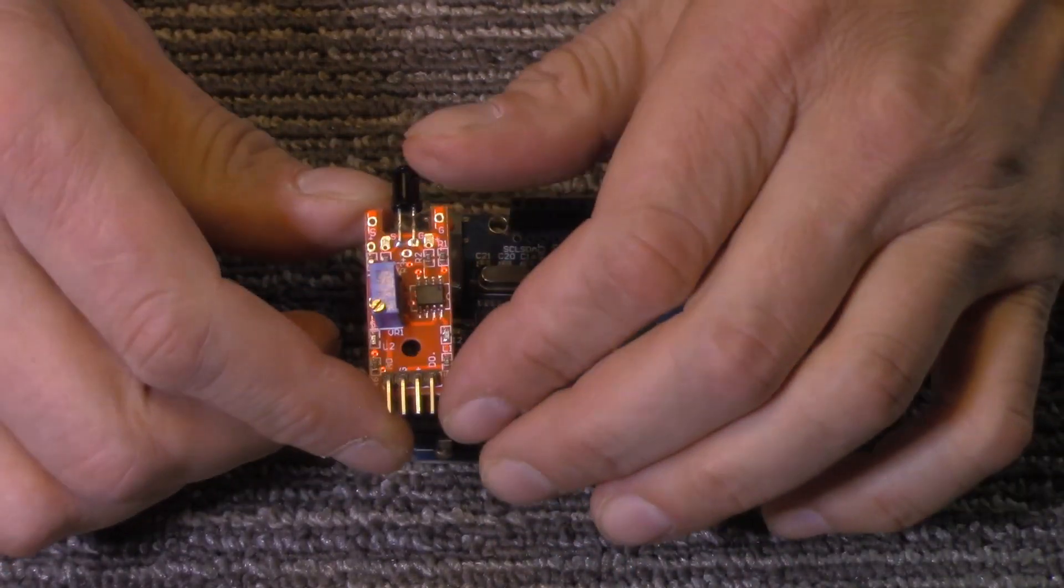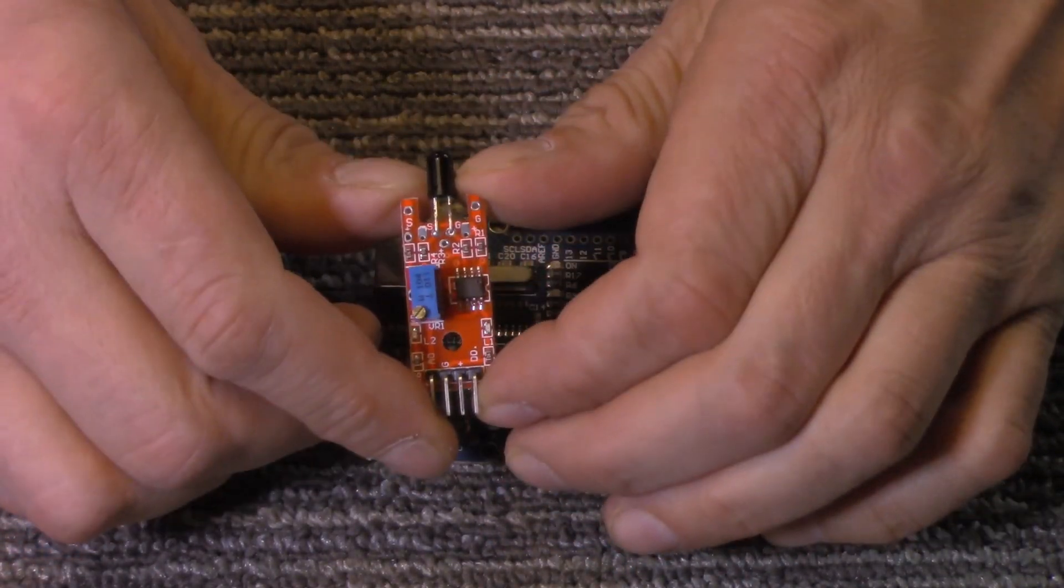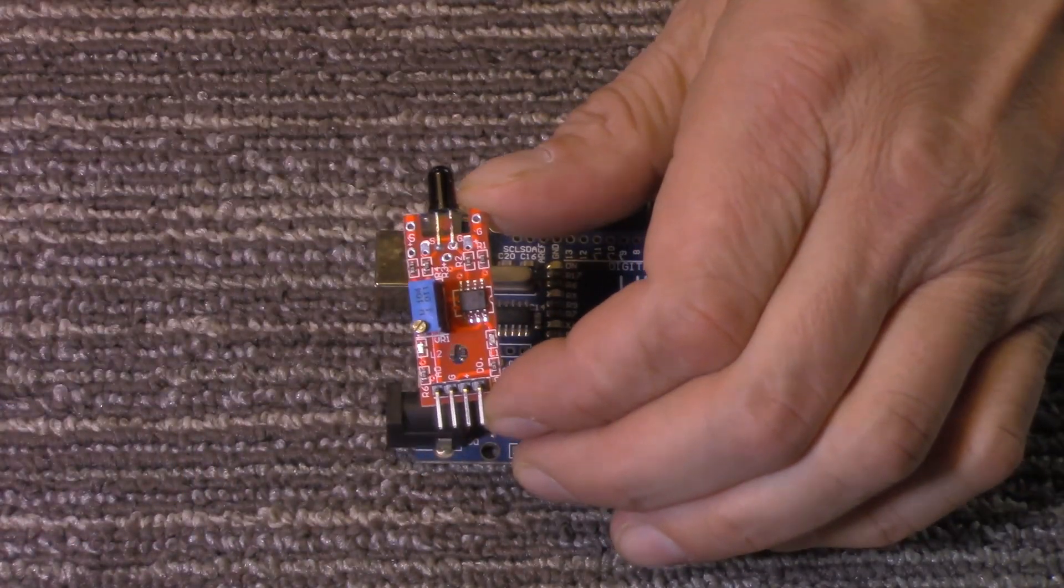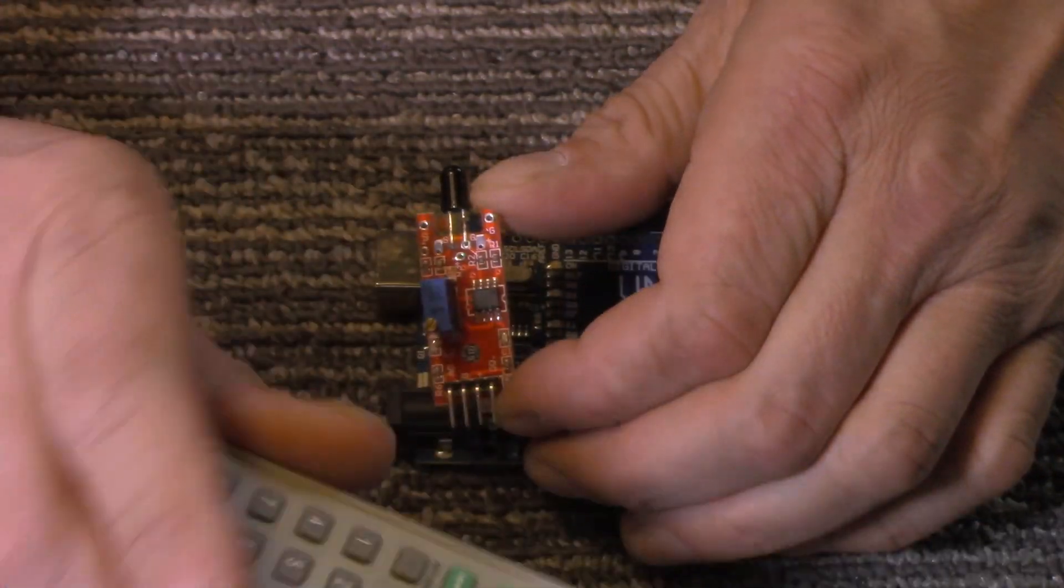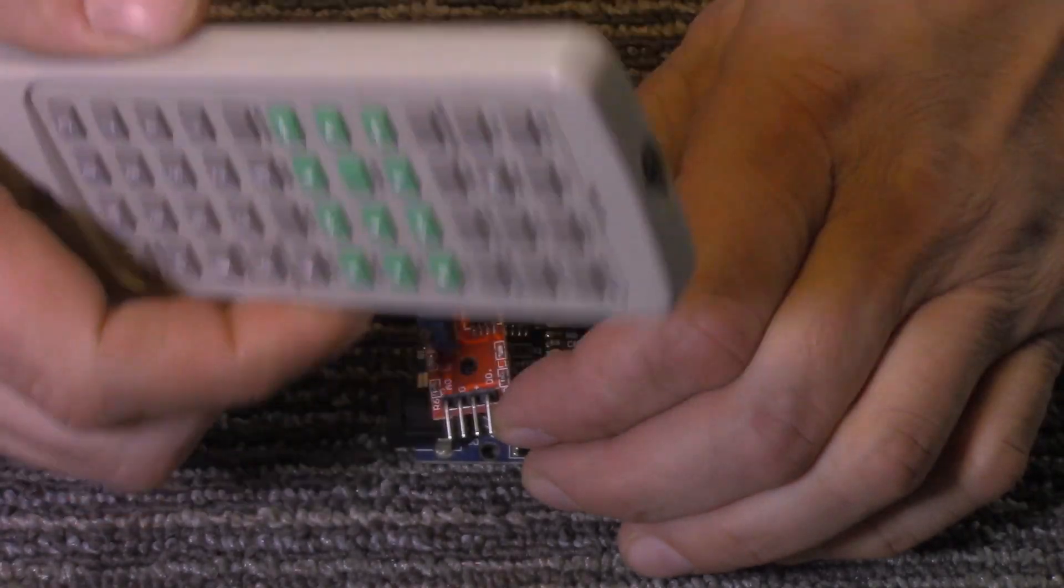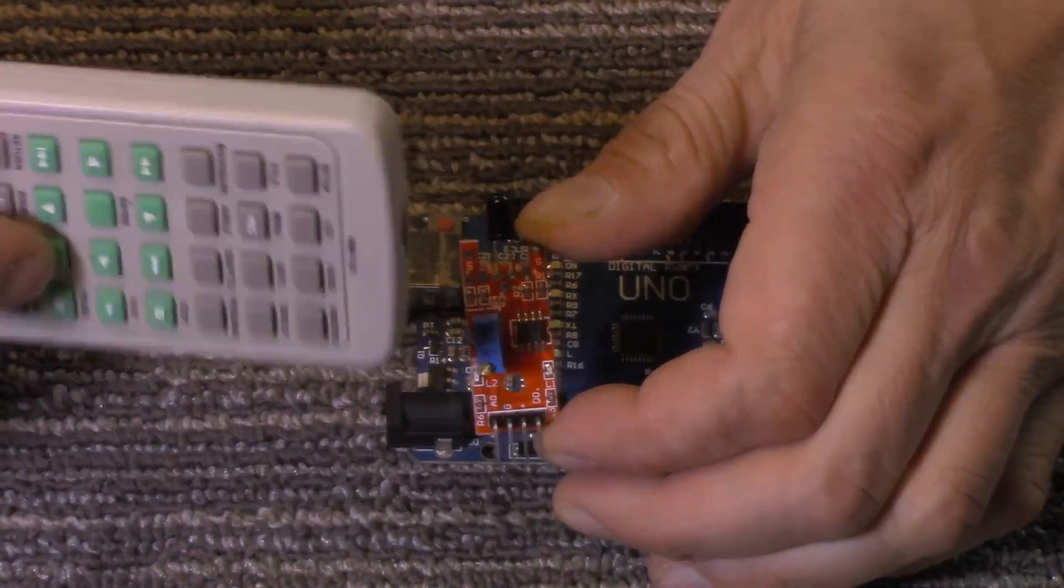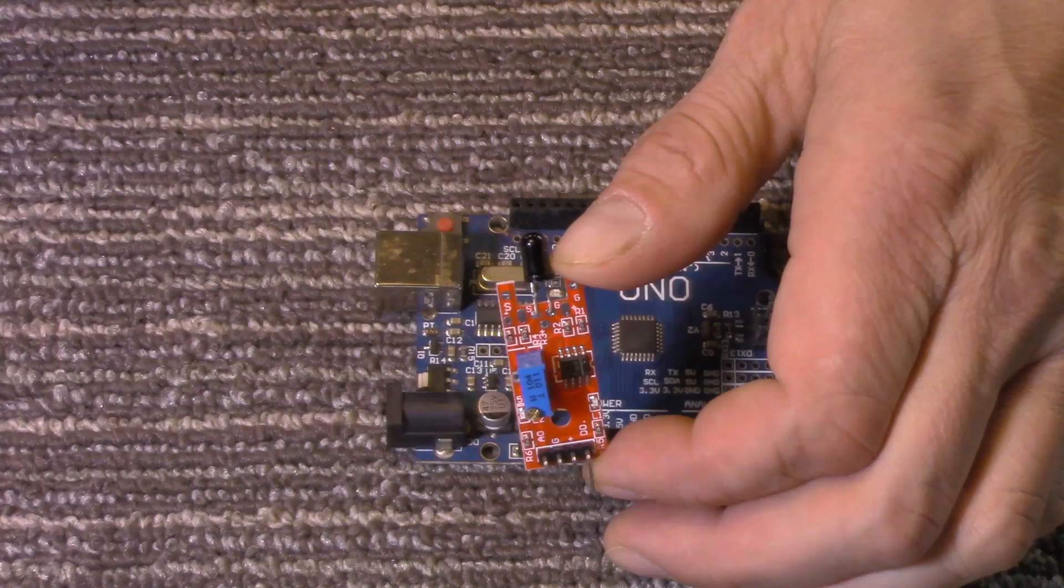Now, this can be used to detect a flame, but another use for it, once I connect it together, I'll show you. You can also use it to detect infrared from a remote, so you could make a tester to test and see if your remotes are working.